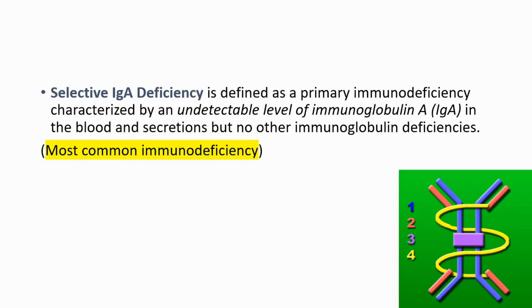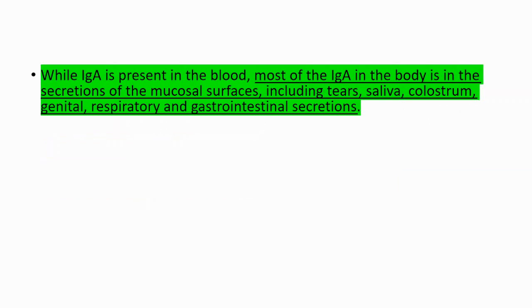It is the most common immunodeficiency, and by the way, it can cause false positive pregnancy tests. IgA can be present in blood, but most of the IgA in the body is found in the secretions of the mucosal surfaces, including tears, saliva, colostrum, and genital, respiratory, and gastrointestinal secretions.